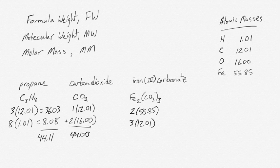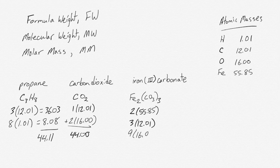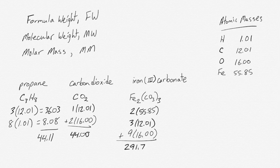And there are three oxygens for every carbonate ion, but we have three carbonate ions, so we have a total of nine oxygens. So nine times the mass of oxygen. And if you multiply all those together, add everything up, you end up with 291.73.